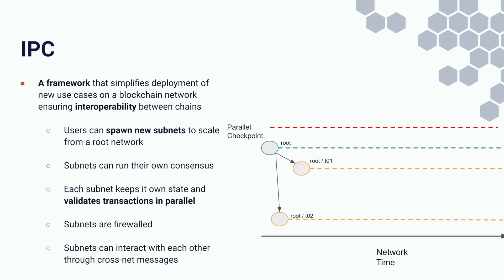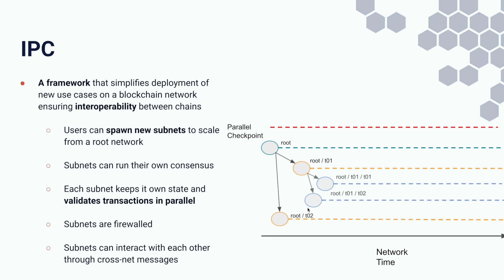Child subnets must not degrade the security of the entire hierarchical consensus system or the parent subnets. For example, we have a root main network and we can create two hierarchical subnets, t01 and t0. Within subnet root/t01, users can for any reason create a new subnet root/t01/t0, and so on.